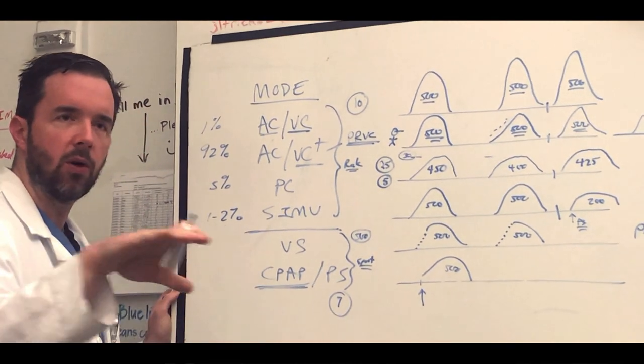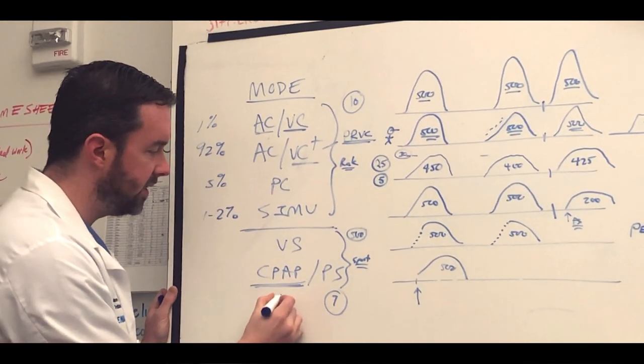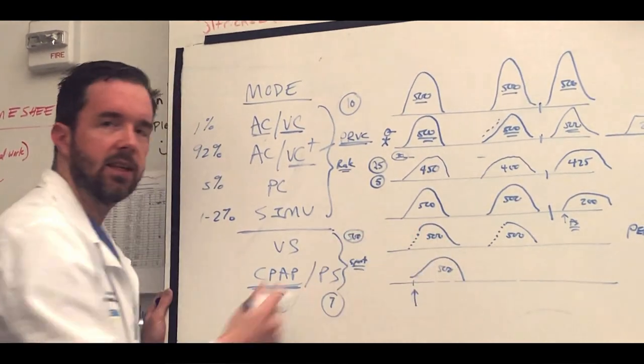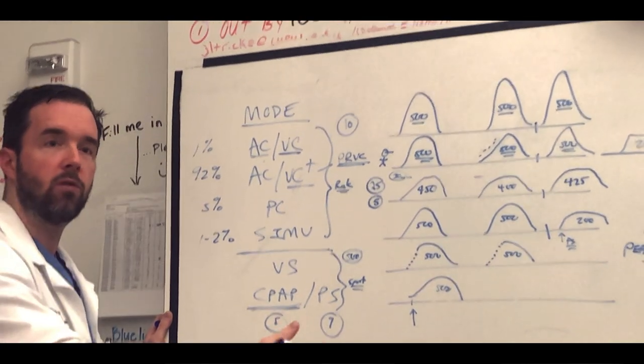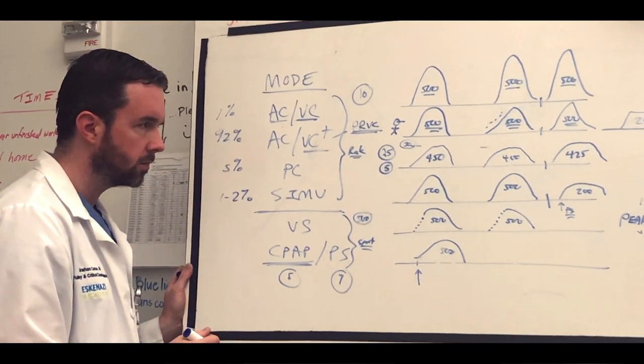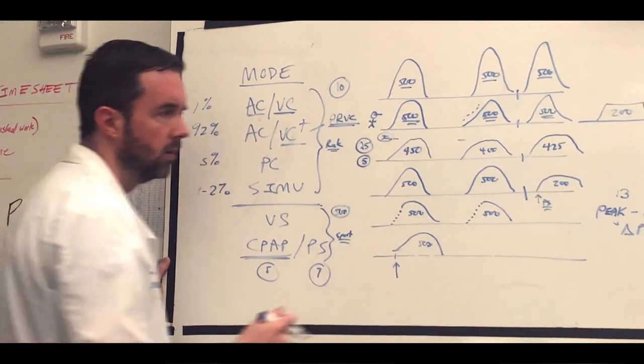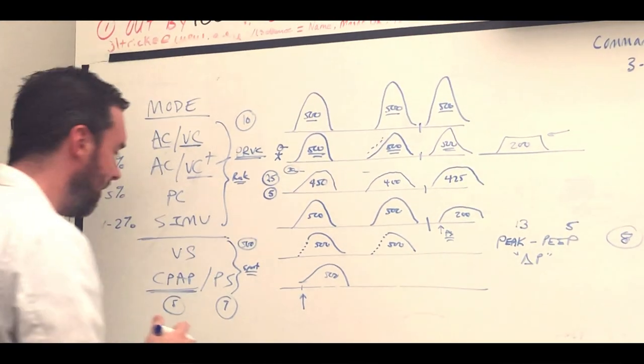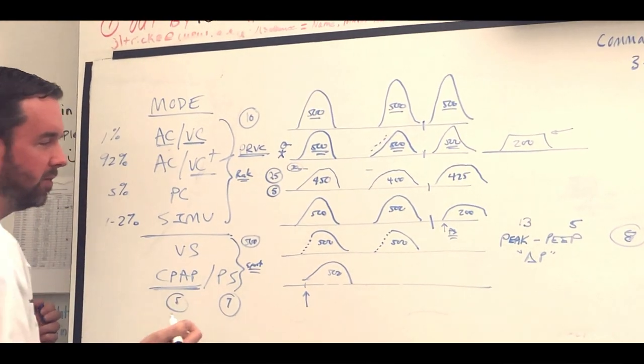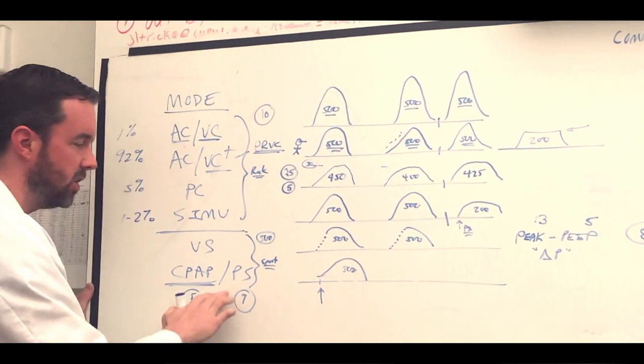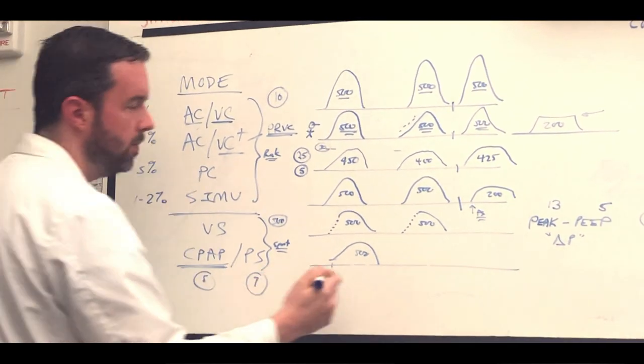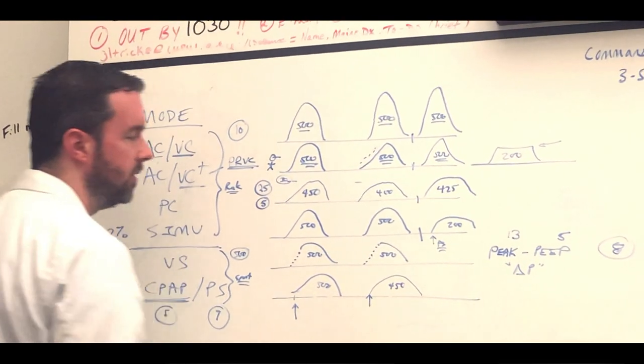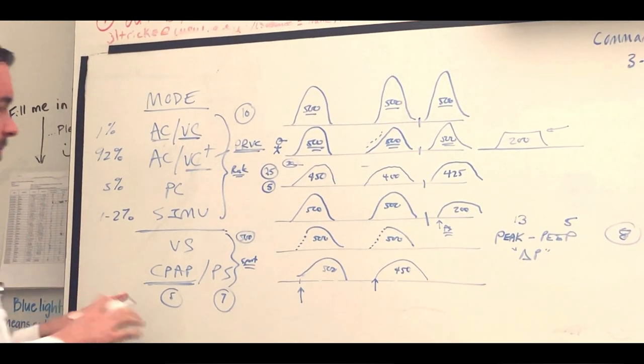CPAP is continuous positive airway pressure. So that means that on inhalation and exhalation they're going to have a pressure going in, just like a CPAP mask. Say for the example it's set at 5. So as the breath begins, you're starting at 5 and you add 7 on top of it. So they're getting that total 5 plus 7, so 12. The volumes are going to vary because again this is more of a pressure mode, it's not a volume mode. So you might see 500 one breath, 450 the next breath, you kind of get the gist of it.